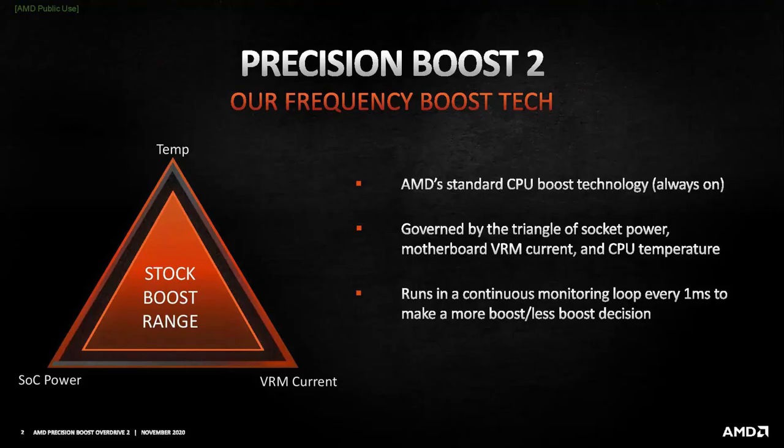When Precision Boost Overdrive 2 is enabled, the maximum operating frequency is governed by three major inputs: total socket power, the motherboard VRM current, and the CPU temperature.